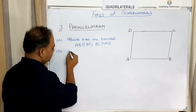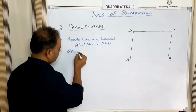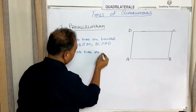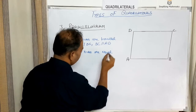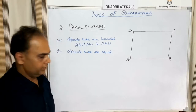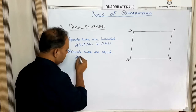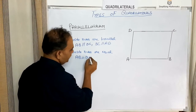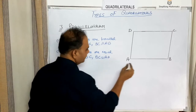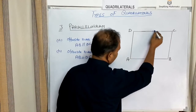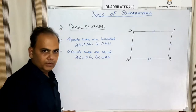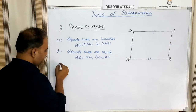The second property of a parallelogram is that the opposite sides are equal — AB equals DC and BC equals AD.